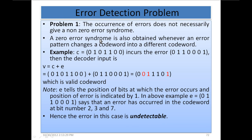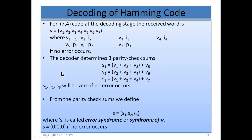Now there is a problem in error detection in Hamming code. The occurrence of errors does not necessarily give a non-zero error syndrome. A zero error syndrome is also obtained when an error pattern changes a codeword into a different codeword. It is possible that you get 0, 0, 0 when the received codeword has been transformed into another valid codeword.